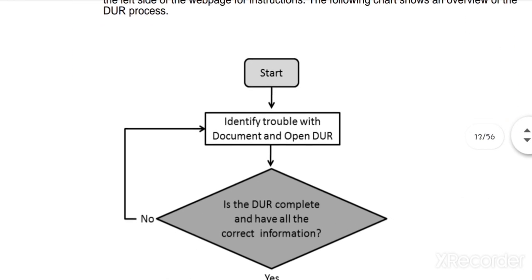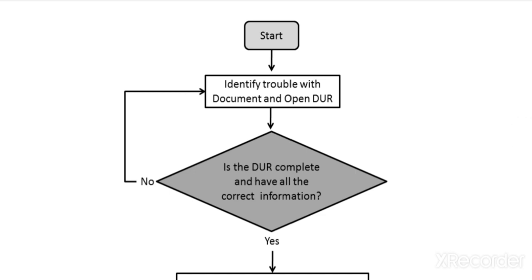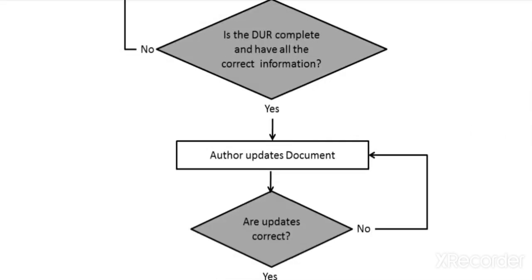The DUR process is between 5212 and 5216, starting with commissioning and running XML files. Today we start and identify trouble with the document and open the DUR. The DUR is run — is the DUR complete and does it have all the correct information? If the information is wrong, we identify the trouble. If the complete information or XML file is complete, it goes to the author to update documents.